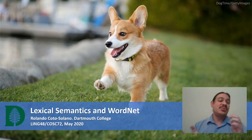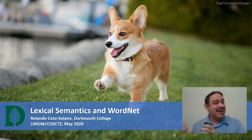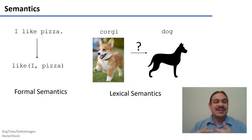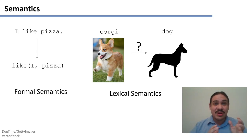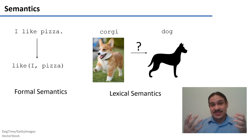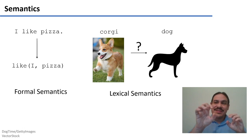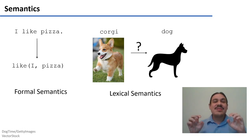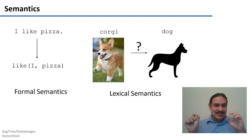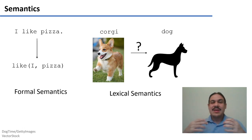For example, what is the relationship between the word corgi and the word dog? In what we've been doing so far, we have been analyzing sentences and extracting entities from sentences. For example, in 'I like pizza,' there are two entities — I and pizza — and there is a relationship between them. So we have two entities held together by a relationship, and the actual implementation of this can take many different forms.